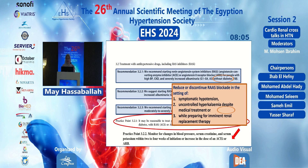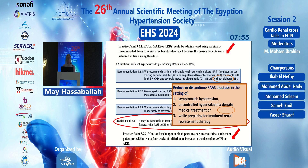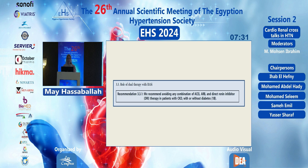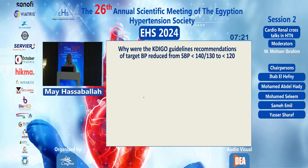RAS blockade should be reduced or discontinued in cases of symptomatic hypotension, uncontrolled hyperkalemia despite medical treatment, or when preparing for imminent renal replacement therapy. Practically, RAS blockade should be administered at the maximally recommended dose, as these are the doses proven beneficial. Data show that mortality is reduced using maximum doses compared to submaximal doses. Combining ACE inhibitors, ARBs, and direct renin inhibitors should be avoided.